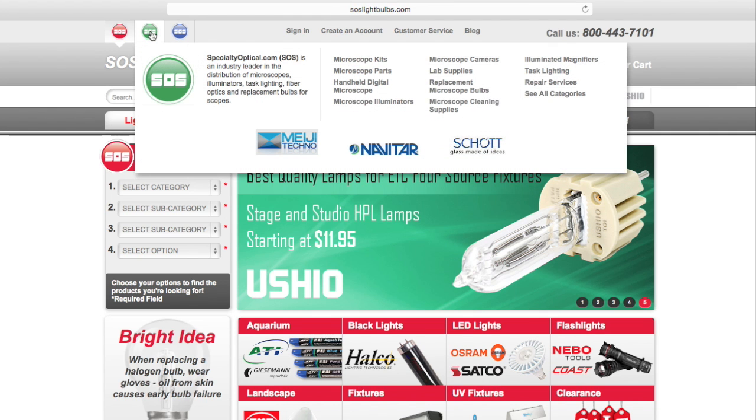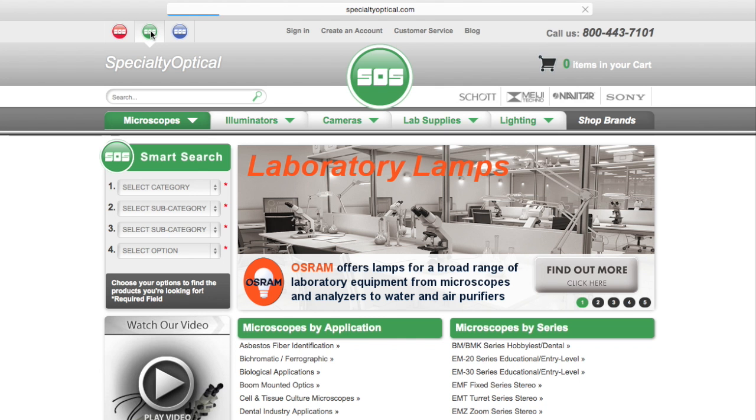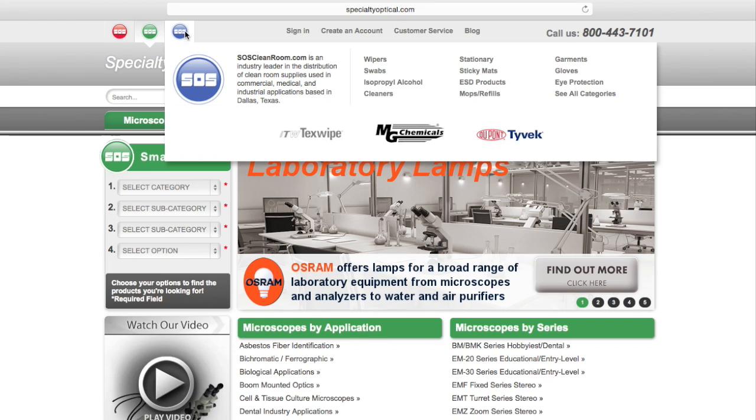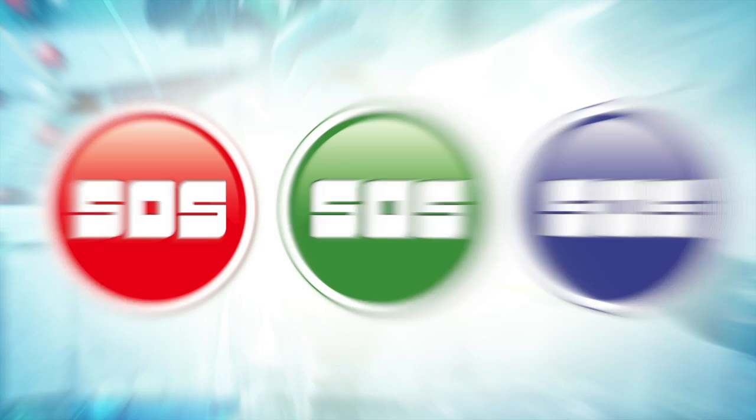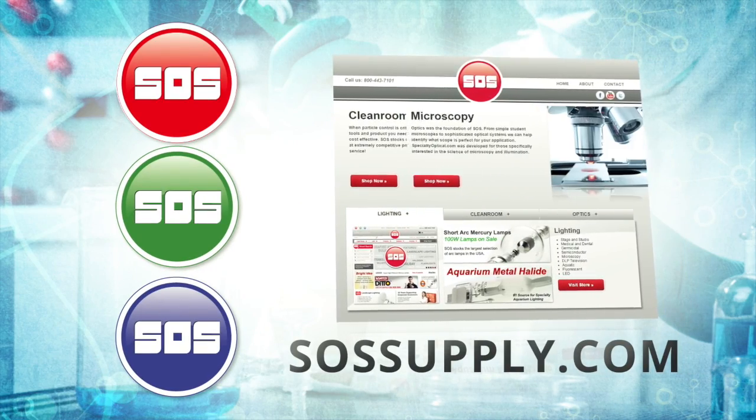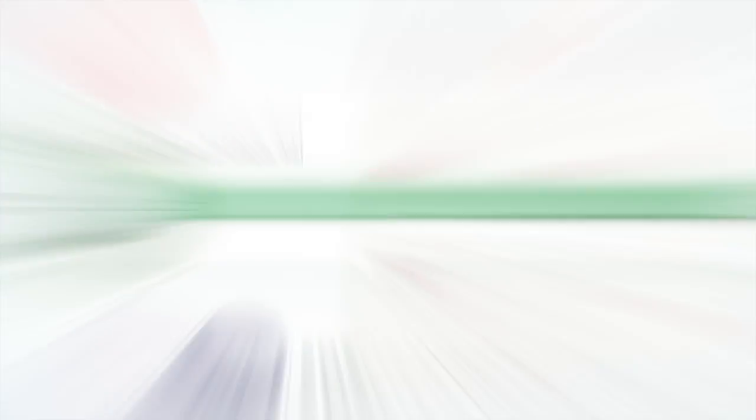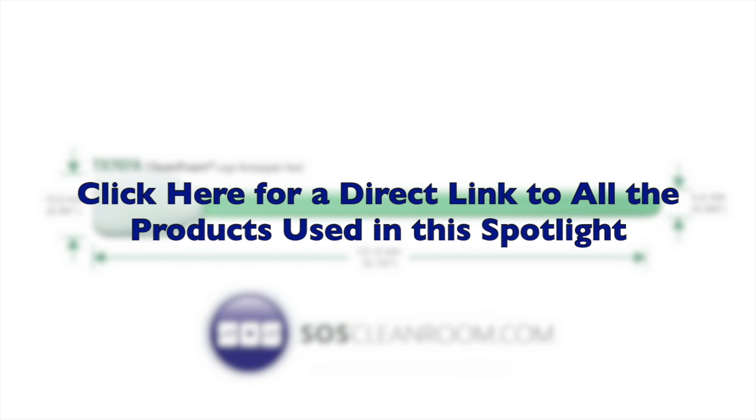Each product specific site is found in the upper left hand corner for easy access. All three sites can be found at SOSsupply.com. Click here for a direct link to all the products used in the spotlight.